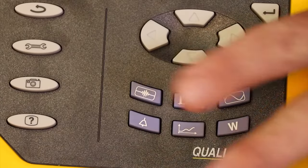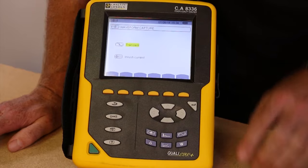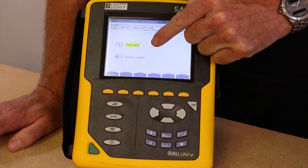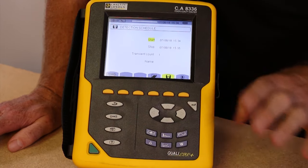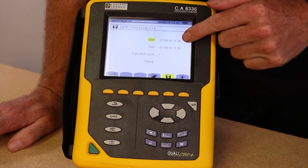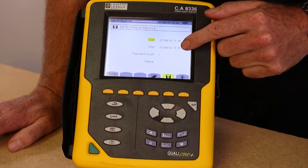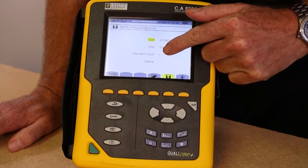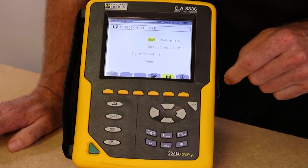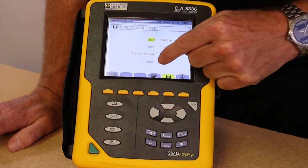The next mode key along shows us the transient and inrush currents start and stop times. This allows us to pick the point in time where I'd like the product to start and stop monitoring transients, and how many I'd like to monitor, starting from 1 up to 210. At the bottom here, we're also able to give the recording a name.